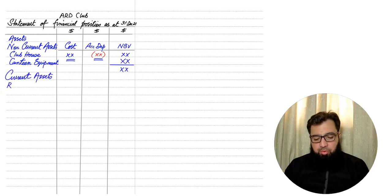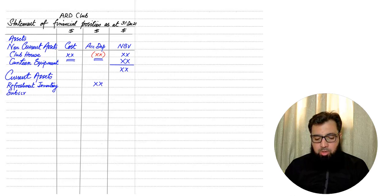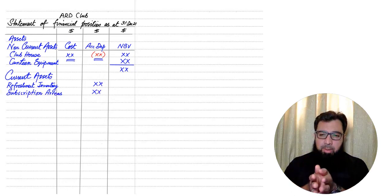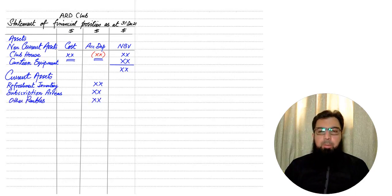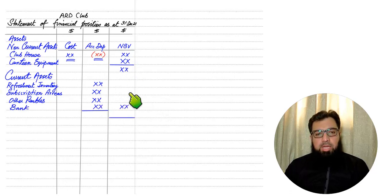Then we have current assets. First is inventory — basically refreshment inventory, with the closing inventory figure. All items come in the second column and the total in the third column. Then we have subscriptions: subscription in arrears means we have provided a facility to our members but they have not yet paid us, so this is a receivable for the club. Then we have other receivables such as prepaid expenses or prepaid rent. Then we have bank balance and cash balance.